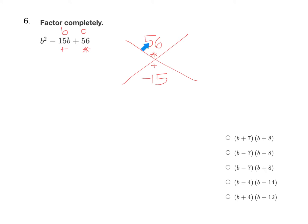Now to multiply to a positive, you need either two positive numbers or two negative numbers. But in order to add to a sum of negative 15, we're going to need two negative numbers. So my factors are both going to be negative here, so that way they multiply to a positive and add to a negative.